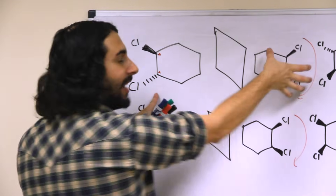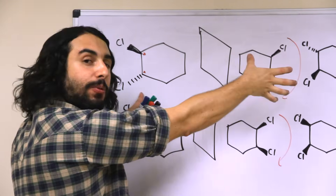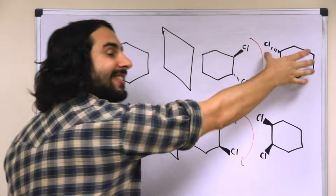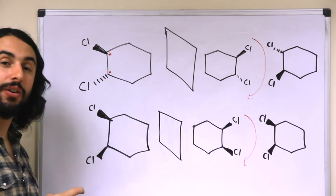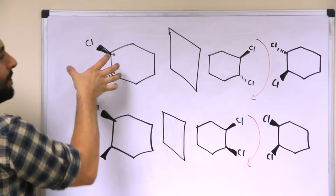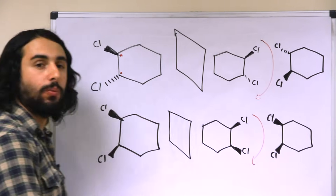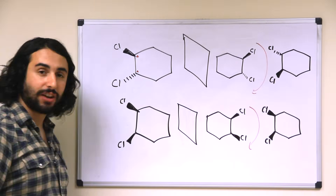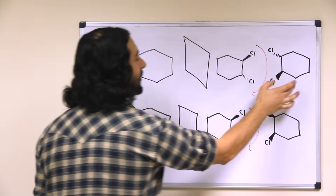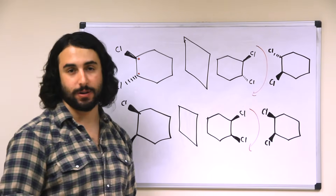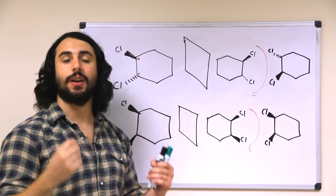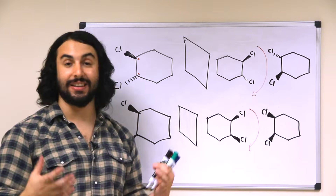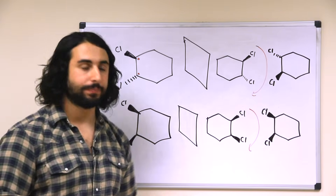If we reflect this across a mirror plane, this is what we're going to get. Then if we rotate it 180 degrees in the plane of the board to try to superimpose it on the original, we'll see that it does not work — a dash chlorine will be on a wedge and a wedge chlorine will be on a dash. Therefore these are non-superposable mirror images; they are enantiomers of one another, and this molecule is chiral.